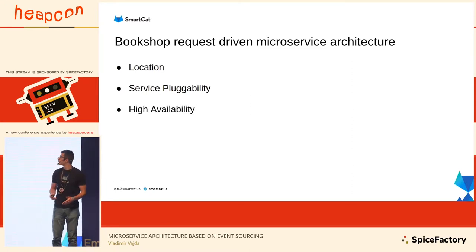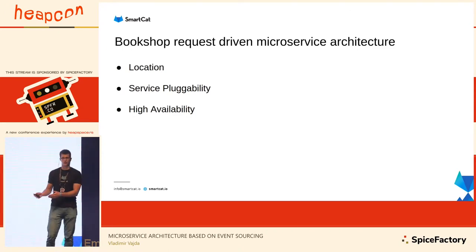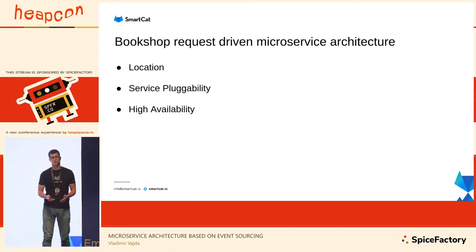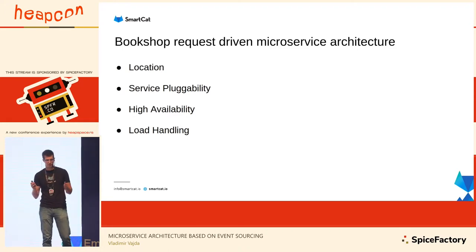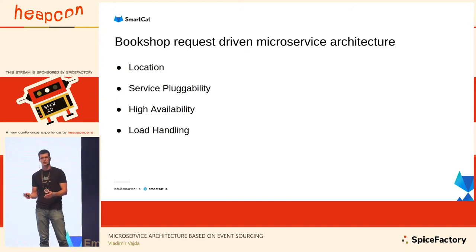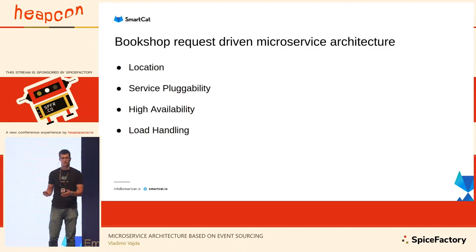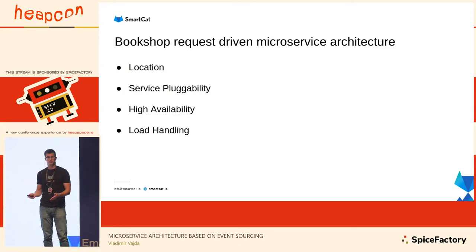The third point is high availability. In this architecture, to solve this problem you probably want to introduce at least two instances of the same service, so if one fails you have another. To spread the load between those, you will introduce some kind of load balancer. The fourth point is load handling. When you have a peak load at a particular time of day, your application cannot handle all the requests and may go down.